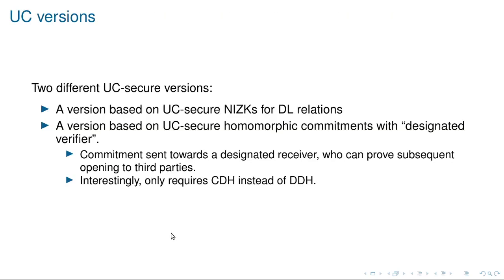The third contribution is to construct two versions of our beacon that are secure under the universal composability framework. One is based on non-interactive zero-knowledge for discrete logarithm relations with a UC-secure implementation. The second is based on UC-secure homomorphic commitments with a designated verifier — meaning the commitment is sent to a designated verifier who can later open its correct opening to third parties. Interestingly, this second construction only requires the computational Diffie-Hellman assumption, not the decisional Diffie-Hellman assumption, making it a weaker assumption.